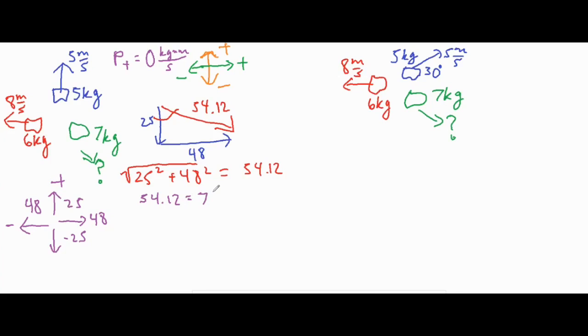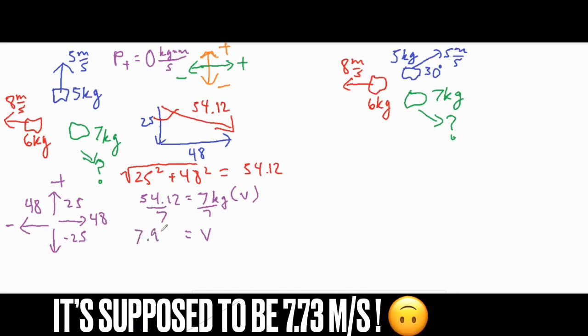And the v is our unknown. We can go ahead and divide both sides by 7. And then we have our final velocity. That final velocity equals 7.93.